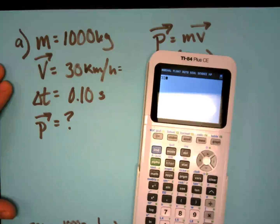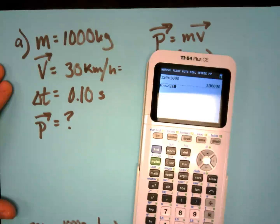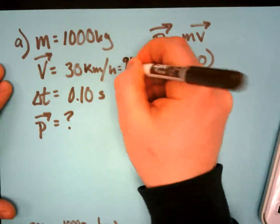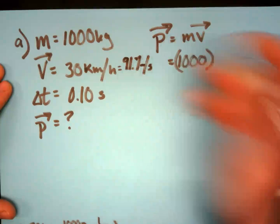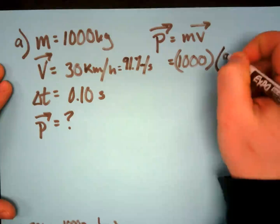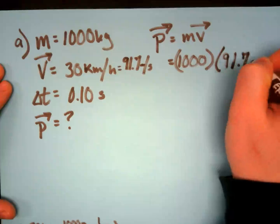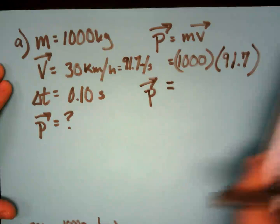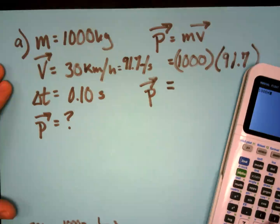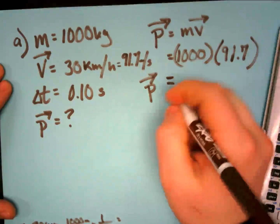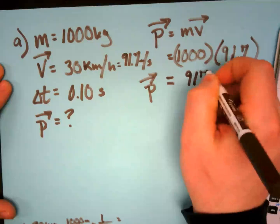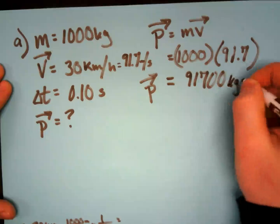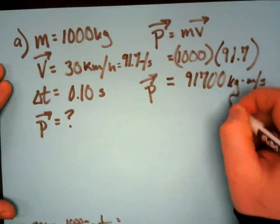Converting: 30 times 1,000 divided by 3,600 gives 8.33 meters per second. So the momentum is 1,000 times 8.33 meters per second, giving us 8,330 kilograms times meters per second forward.